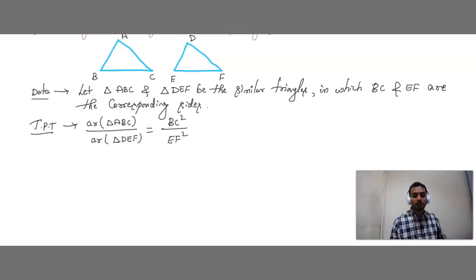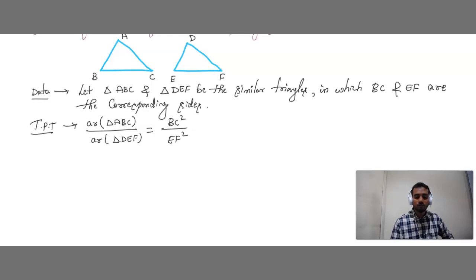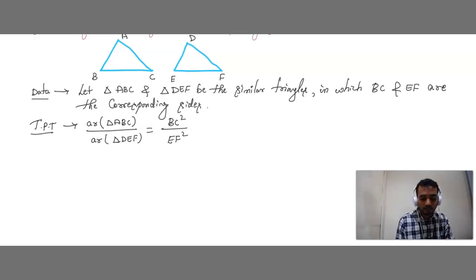Please do not memorize the theorem blindly. Just see the figure and solve. We have taken two triangles ABC and DEF, both similar, in which BC and EF are the corresponding sides. What we have to prove is that the ratio of the areas equals the square of the ratio of the corresponding sides.